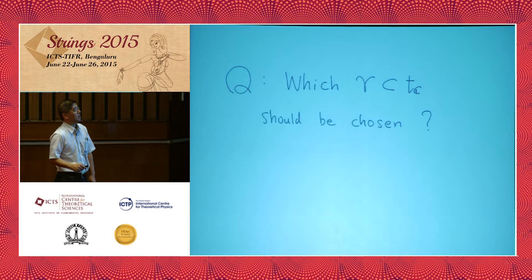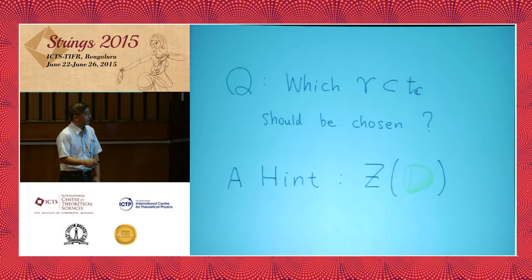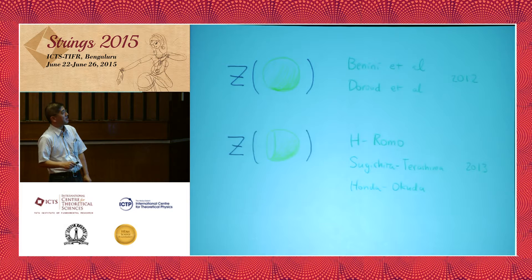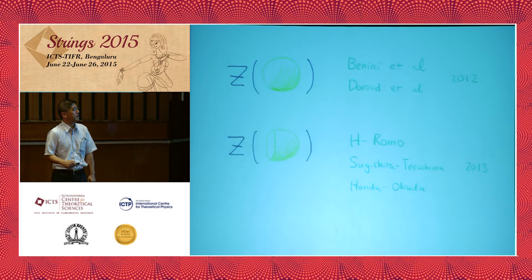A hint can be drawn by looking at the hemisphere partition function. The supersymmetric partition function on the hemisphere can be defined analogously to the partition function on the two-sphere, and can be computed exactly by SUSY localization. The result is written as a contour integral of some function on the zero mode of the vector multiplet scalar.